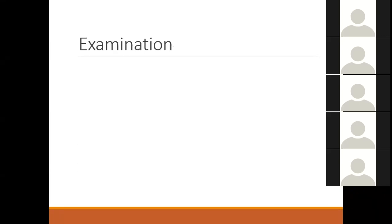On examination, first assess the quality of the voice — is it hoarse, or is it dysarthria where words are not clearly produced due to tongue or neurological problems? Hoarseness relates to the voice itself, while dysarthria relates to word production. Assess whether the voice is hoarse, whether there is dysarthria, or whether it is a change in tone.